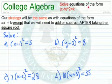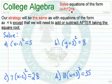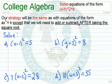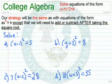We now want to solve equations of the form x minus h squared equals k. Our strategy will be the same as with equations of the form ax squared equals k, except that we will need to add or subtract after taking the square root. Let's illustrate this.